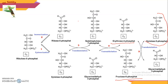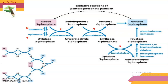These are all the non-oxidative reversible steps. To summarize: step 1 is epimerization, step 2 is isomerization, step 3 is transketolation, step 4 is transaldolation, and step 5 is transketolation again. The final products fructose-6-phosphate and glyceraldehyde-3-phosphate can either directly undergo glycolysis or be converted back into glucose-6-phosphate with the help of phosphohexose isomerase.